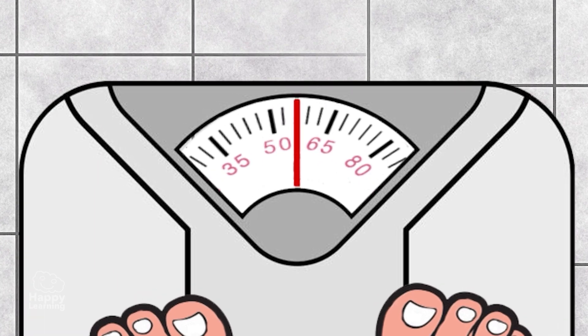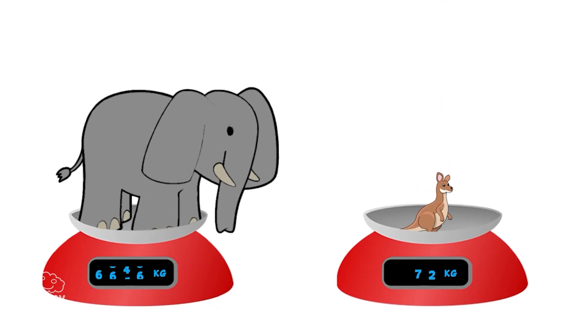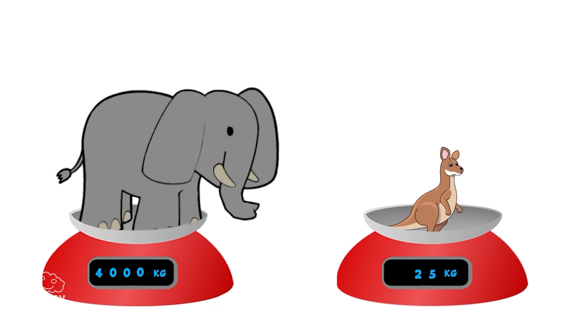Let's give you an example so that you can understand it better. An elephant weighs 4,000 kilos and has a lot more matter than a kangaroo, which weighs only 25.